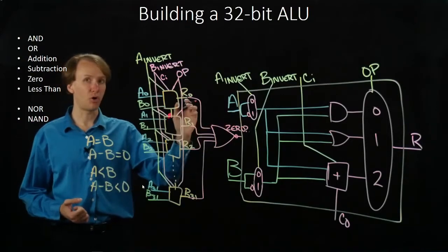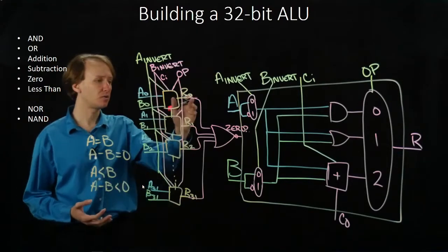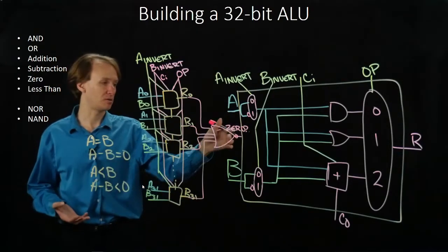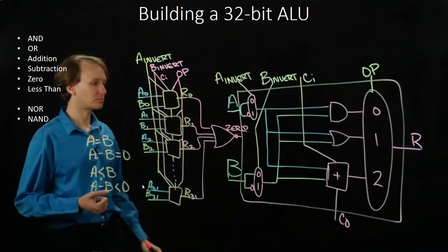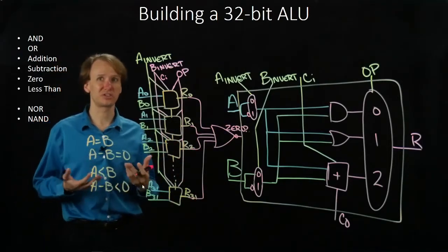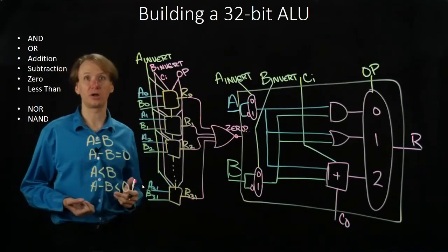If we make that a NOT gate, then this result will only ever be true if none of these bits is one. If any one of them is one, then our OR gate would be one, and NOT one would be zero. So now we have an easy way to tell whether two things are equal. We can just do a subtraction operation and look at what the results of this zero line are.